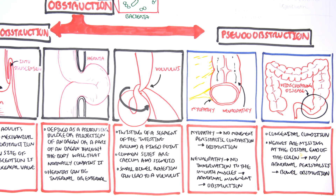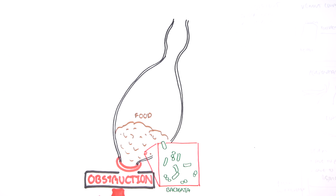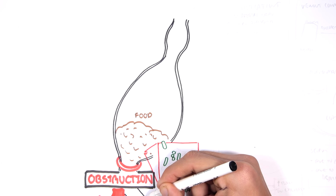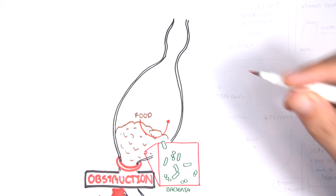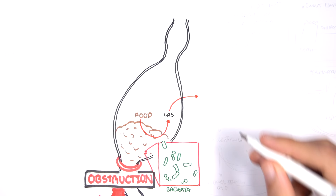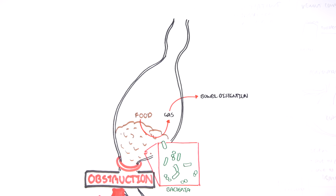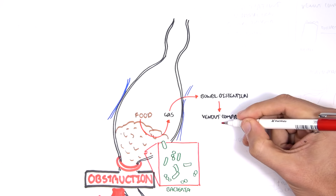Regardless of the cause — pseudo obstruction or mechanical obstruction — the result is that material cannot pass through the bowels smoothly and accumulates. The food that piles up can be metabolized by the bacteria normally residing in the area to produce gas. Gas accumulates, causing bowel distension.